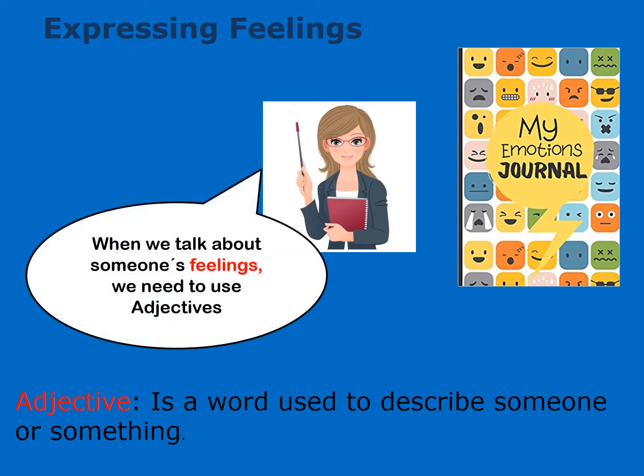The first thing we have to take into consideration when we talk about someone's feeling is that we need to use adjectives. What is an adjective? An adjective is a word used to describe someone or something. For example: happy, sad, angry, embarrassed, etc.